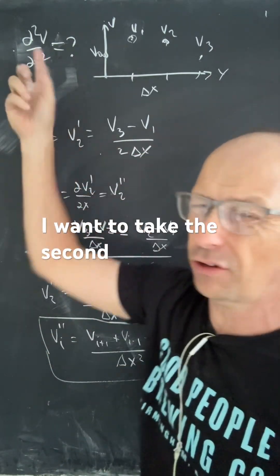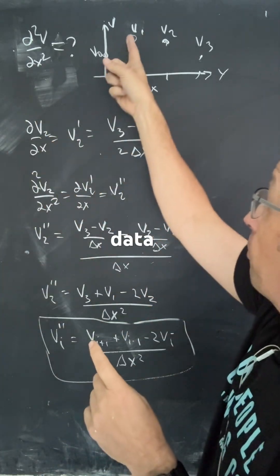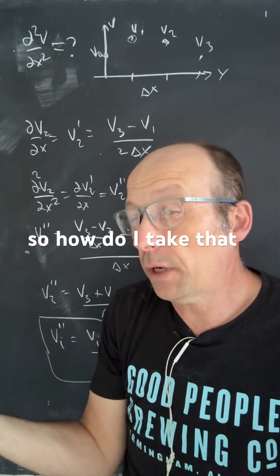So imagine I want to take the second derivative of potential V with respect to x, and I have finite data points. I have the values for V. Okay, so how do I take that derivative?